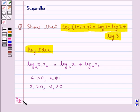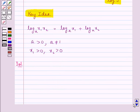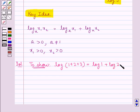Let's proceed with the solution now. We are supposed to show that log(1+2+3) equals log 1 plus log 2 plus log 3.